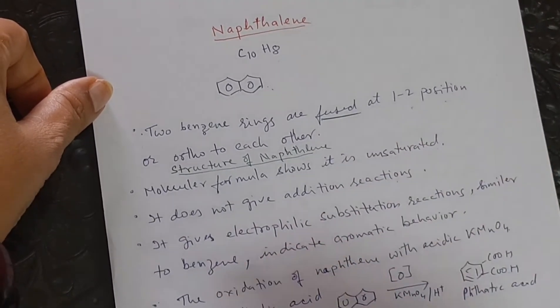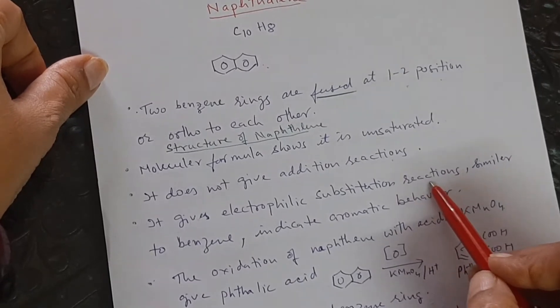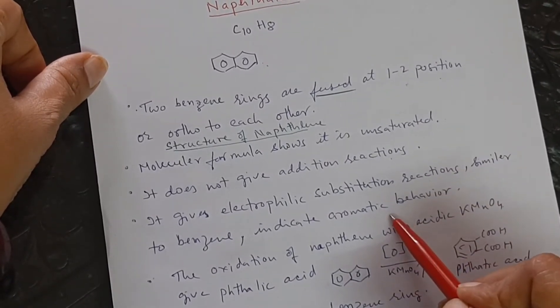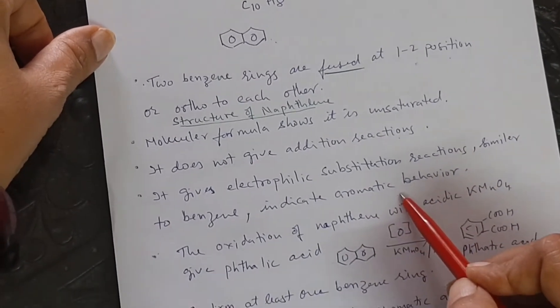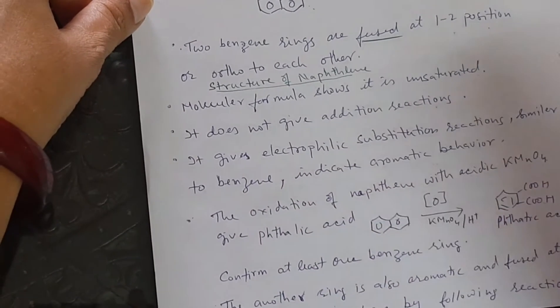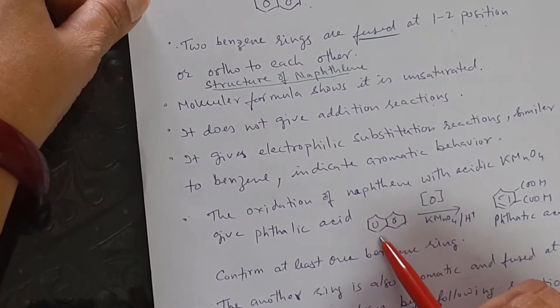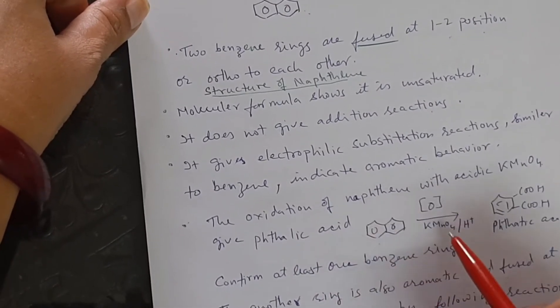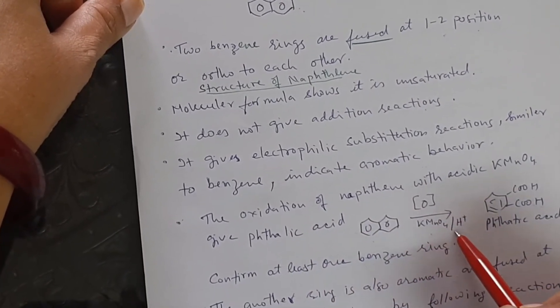It has double bond or triple bond. Because naphthalene is an unsaturated compound and it doesn't give addition reactions, it gives electrophilic substitution reactions. It means it is an aromatic compound or it has aromatic behaviour similar like benzene. To confirm its structure, if you oxidize the naphthalene with KMnO4 in the presence of acid, it gives phthalic acid.